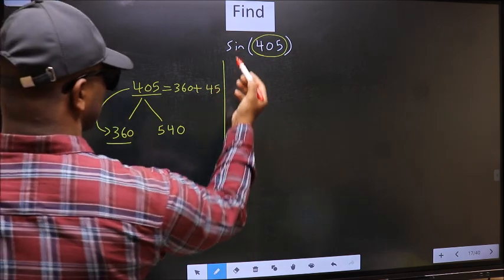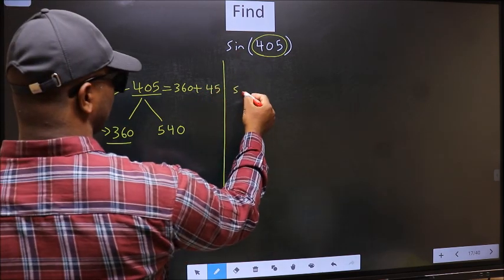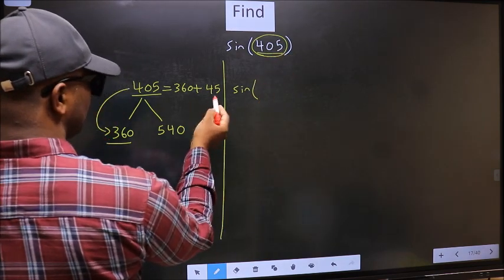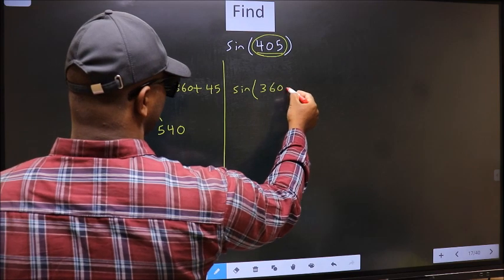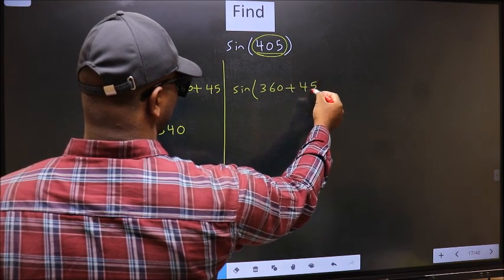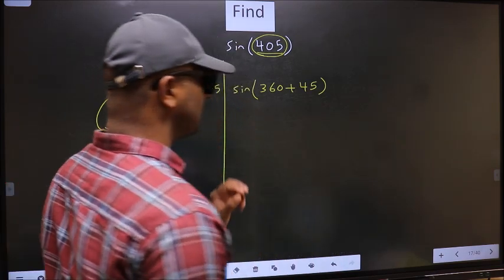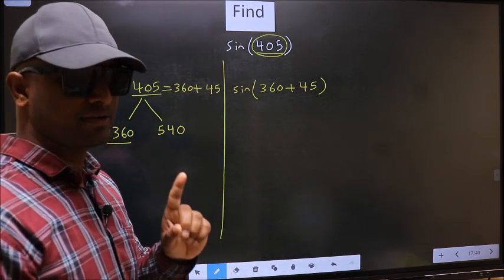So this will become sin. In place of 405, we should write 360 plus 45. This is your step 1.